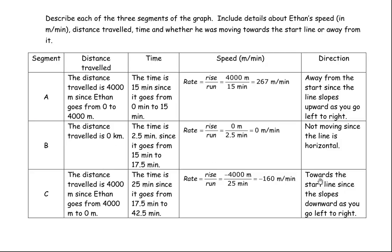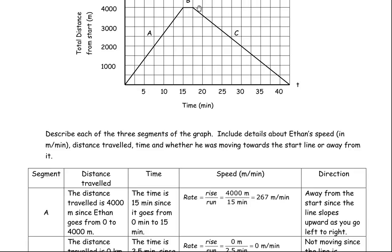And he's going towards the start line, because it's sloping downward as you go from left to right. Okay, remember he's 4,000 meters away from the start line, he's 3,000, he's 2,000, he's 1,000 away, he's getting closer, and 0 would mean, right there, that he's at the back to the start line, which we would call the finish line, probably. And that's the end of the last explanation.